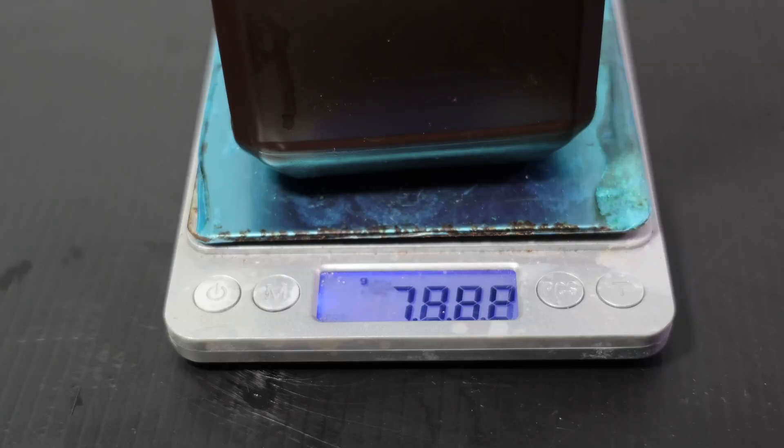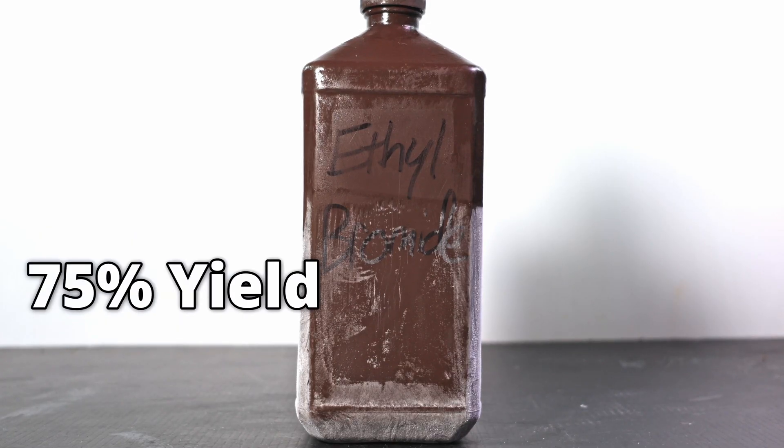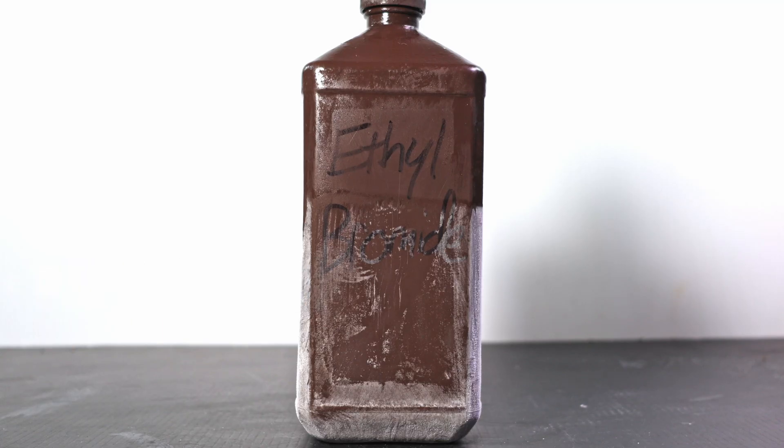My total yield is 793.3 grams. The ideal mass is 1060, so I got a 75% yield. That is very good considering I used overly concentrated sulfuric acid and I bet it could be even better with a higher dilution.